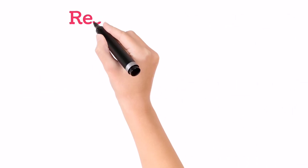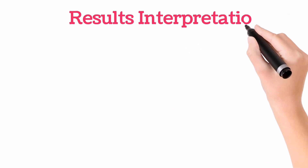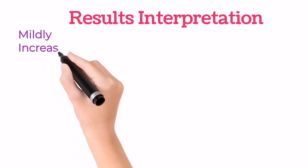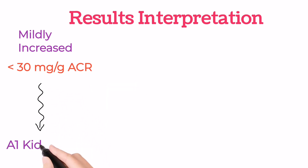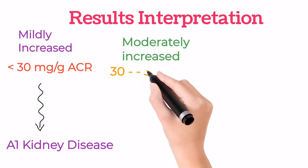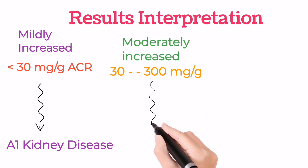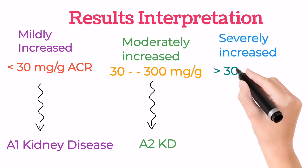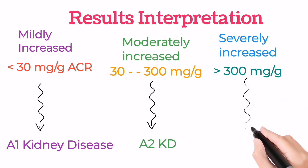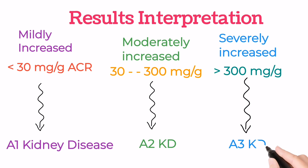If the UACR value is abnormal, the results are interpreted as follows: if the ACR is less than 30 mg per gram, it is a mildly increased category 1 kidney disease. If the ACR is between 30 to 300 mg per gram, that is a moderate increase indicating category 2 kidney disease. If the UACR value is above 300 mg per gram, it means the kidney disease is in category 3, which is a severe increase. Thanks for watching — do subscribe, like, and share the video.